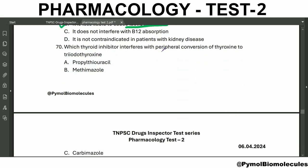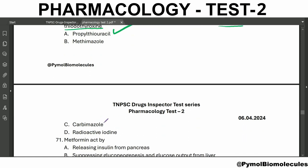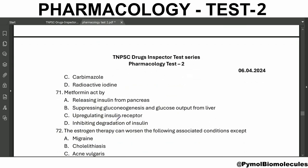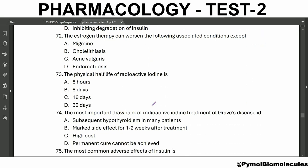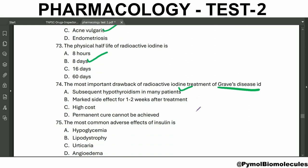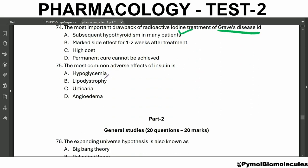Which thyroid inhibitor interferes with the peripheral conversion of thyroxine to triiodothyronine? It is propylthiouracil — methimazole and carbimazole do not have this action. Metformin acts by suppressing gluconeogenesis and glucose output from the liver. Estrogen therapy can worsen associated conditions except acne vulgaris. The physical half-life of radioactive iodine is eight days. The most important drawback of radioactive iodine in treatment of Graves' disease is subsequent hypothyroidism in many patients.